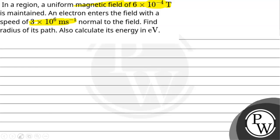The question states we have a uniform magnetic field of 6×10⁻⁴ tesla. This magnetic field acts on an electron, and its speed is 3×10⁶ meter per second. The electron enters perpendicular to the magnetic field, so the angle between velocity and field is 90 degrees.